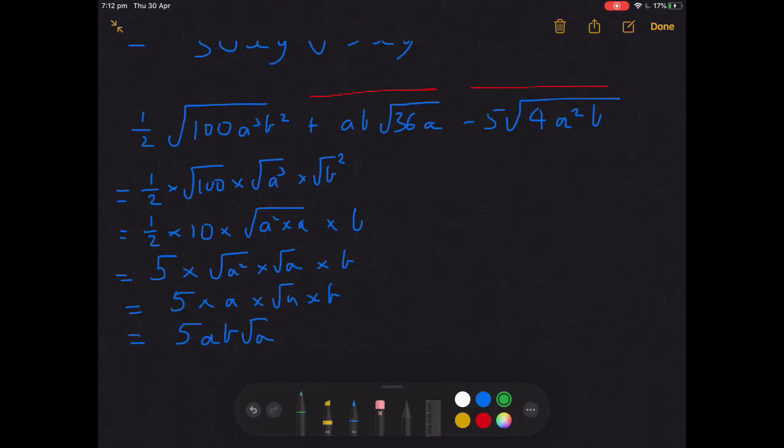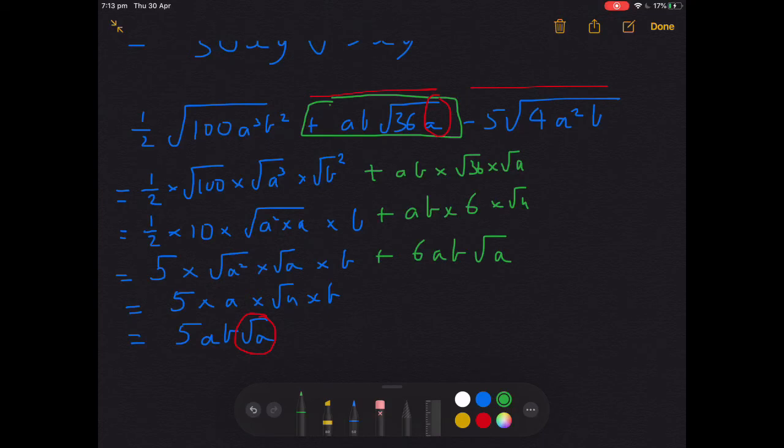Second bit. I think I might do the second bit in green. ab root 36a. That's going to work quite nicely. Because in this first one, we've got a root a, and here, we're going to end up with a root a. So we're going to have like terms. This is ab times root 36 times root a. That's ab times 6 times root a, which is 6ab root a. The blue one and the green one are going to add very easily.